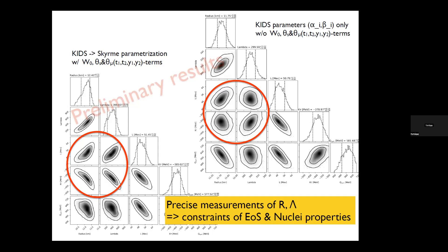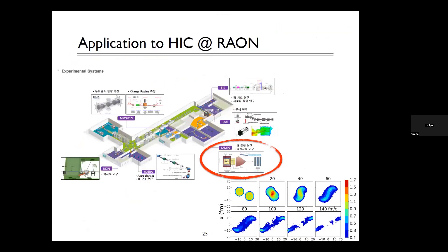These constraints can be applied to heavy-ion collision simulations. The LENS experiment is designed to study dense nuclear matter and measure nuclear symmetry energy. From those results, we can apply constraints to heavy-ion collision simulations. Through all these combined efforts, we can quantify model uncertainties and more precisely describe the relation between neutron star physical parameters and nuclear parameters.